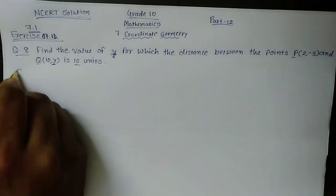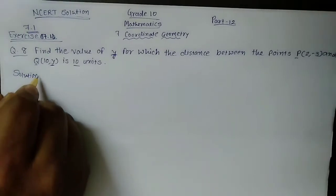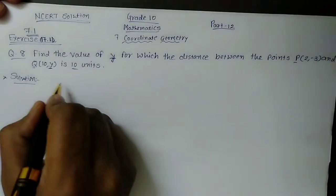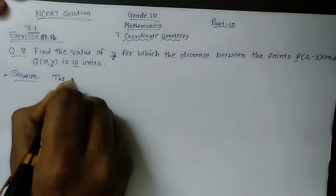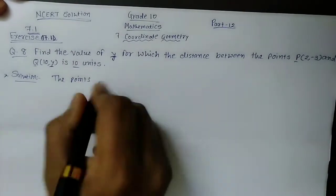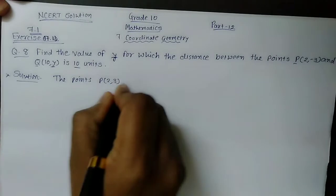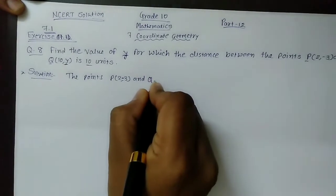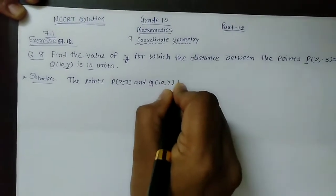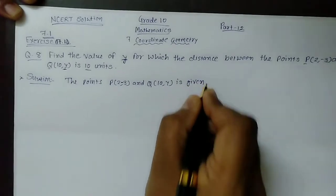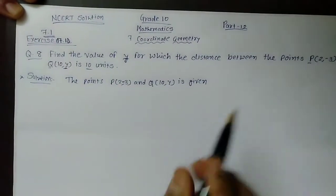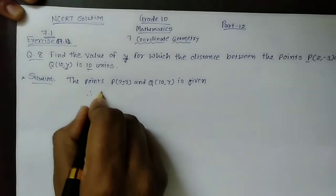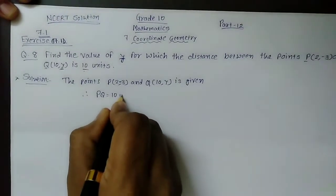Let us begin the solution. What is given? The points P(2, -3) and Q(10, Y) are given. The distance between these two points P(2, -3) and Q(10, Y) is given as 10 units. So PQ is equal to 10 units.